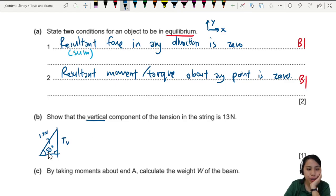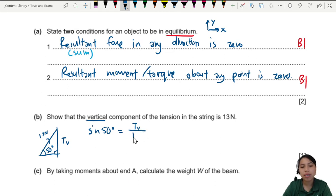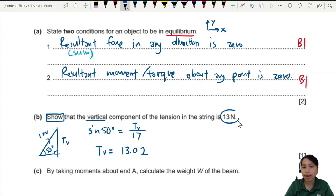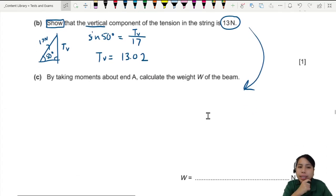Since Tv is opposite and 17 newtons is the hypotenuse, we use sin: sin(50°) = Tv / 17. Pressing the calculator gives a vertical component of approximately 13.0 newtons. This is a show question, so you can use 13 newtons in subsequent calculations.